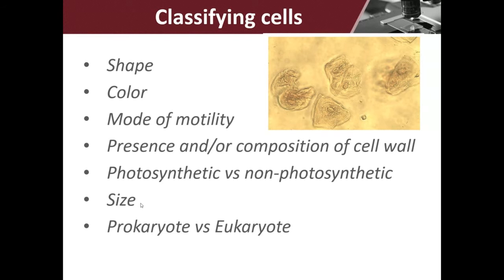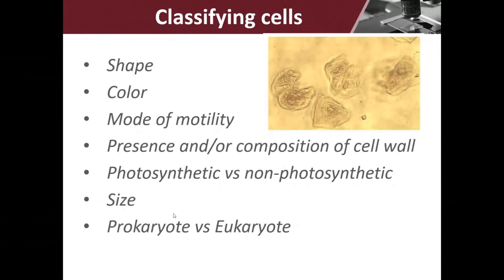Think about a chicken egg — that's way bigger than 100 micrometers, and that's a eukaryotic cell. So it can be way bigger, but for the most part they're in that size range. And then of course we could classify them as being prokaryote or eukaryote. So looking at this cell picture right here — blobby shaped, doesn't have much color, we can't see it moving, we don't really know if it has a cell wall, it doesn't look green, so we'd probably put it in the category of possibly being non-photosynthetic.